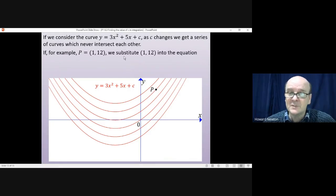So let's say for example that p was equal to (1,12). If that was the case then we just substitute (1,12) into the original equation, just like you'd normally do if you're calculating c for a straight line. So we're putting in y = 12 and x = 1 into the equation, that gives us 12 = 3 + 5 + c, which gives us c is equal to 4, and that means that the correct equation is this one here.